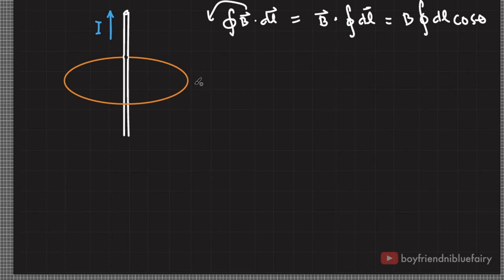And based on this figure, anywhere along this path, B is always tangent with the integration path. So this is actually cosine 0, which means this is equal to 1.